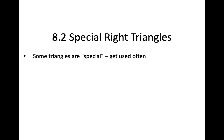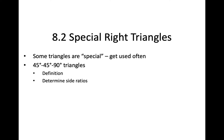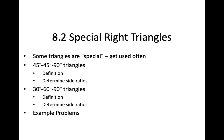Today's lesson, 8.2, is about special right triangles. We're going to talk about why some triangles are special — they get used a lot — and those two triangles are a 45-45-90 triangle and a 30-60-90 triangle. We'll define each, determine the side ratios, and then do a bunch of example problems. In one of those example problems I will demonstrate the graphic organizer I gave you in class, which is also available on Canvas.